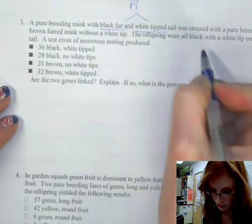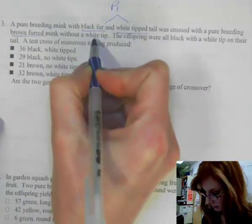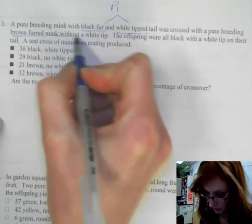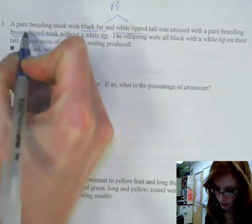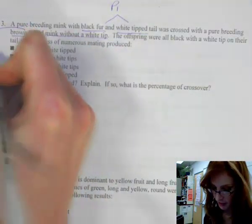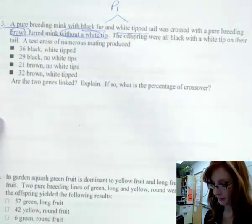A pure breeding mink with black fur and white tip tail, so that's my first parent, was crossed with a pure breeding brown fur without a white tip. It's all lovely sounds of you to be loaded onto YouTube. So here's parent number two.